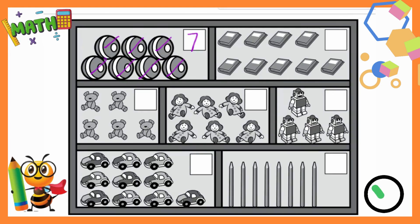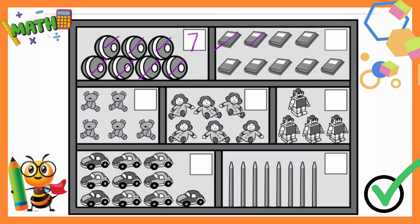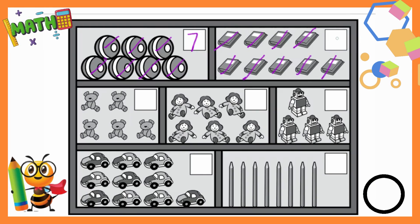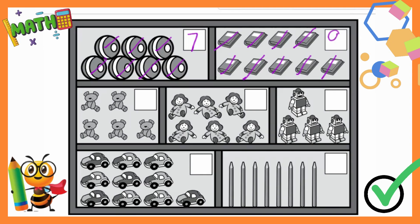Next are books. Start counting with me: 1, 2, 3, 4, 5, 6, 7, 8, 9. Very good! Write down 9. As soon as you count one, mark it so you don't confuse yourself.